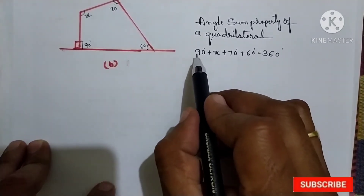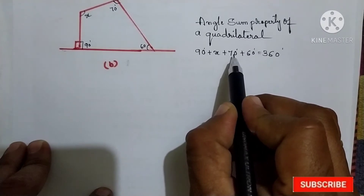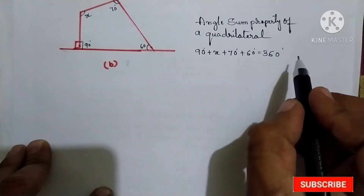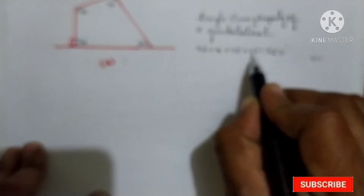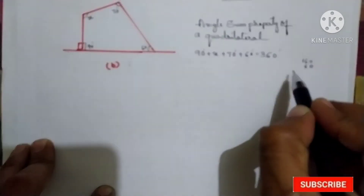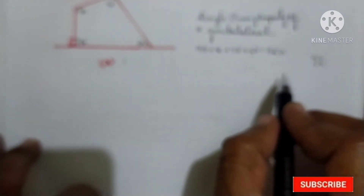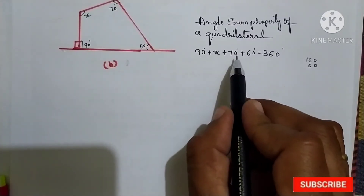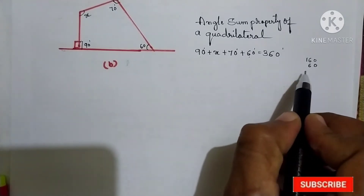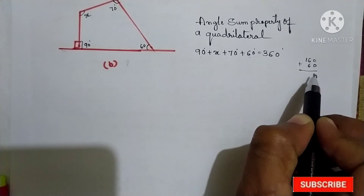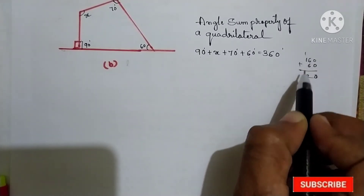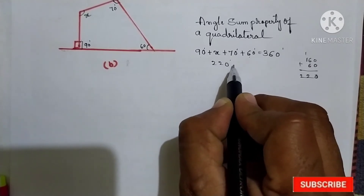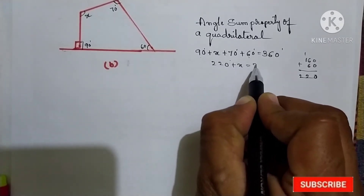Now you should add here: 90 plus 70 is 160, then the fourth angle is 60 degrees, so 160 plus 60 is 220. Therefore, 220 degrees plus x is equal to 360 degrees.